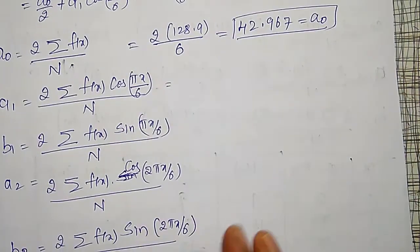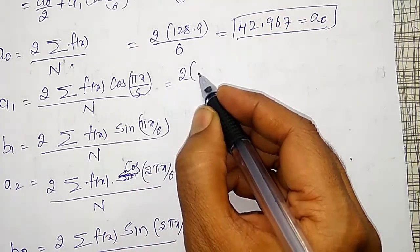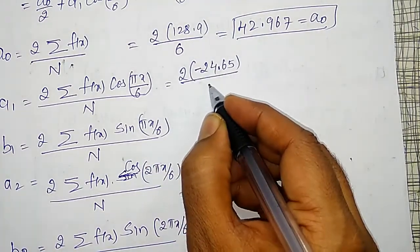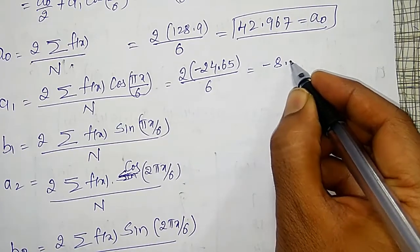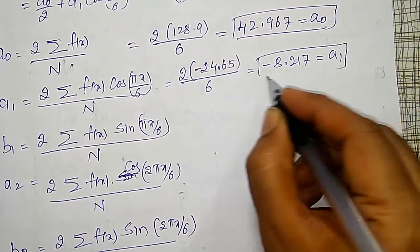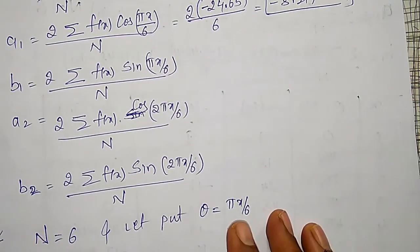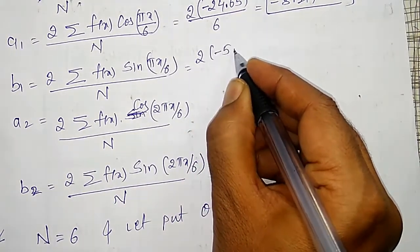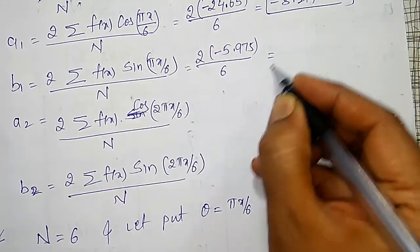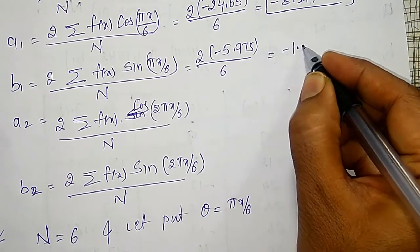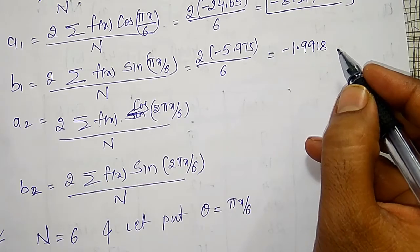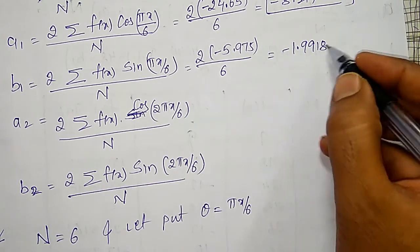To find A1: 2 times the summation of F of X times cos theta, which is minus 24.65, divided by 6, gives A1 equals minus 8.217. To find B1: 2 times the summation of F of X times sin theta, which is minus 5.975, divided by 6, gives B1 equals minus 1.9918.